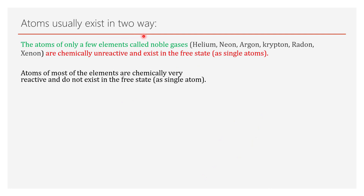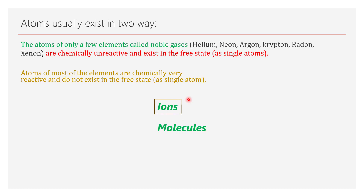Now we will see how atoms really exist in nature. Atoms usually exist in two ways. The atoms of only a few elements, called noble gases, are chemically unreactive and exist in the free state as a single atom. We will discuss about noble gases later in the course. Atoms of most elements are chemically very reactive and do not exist in the free state as a single atom, so they usually exist as either ions or molecules.